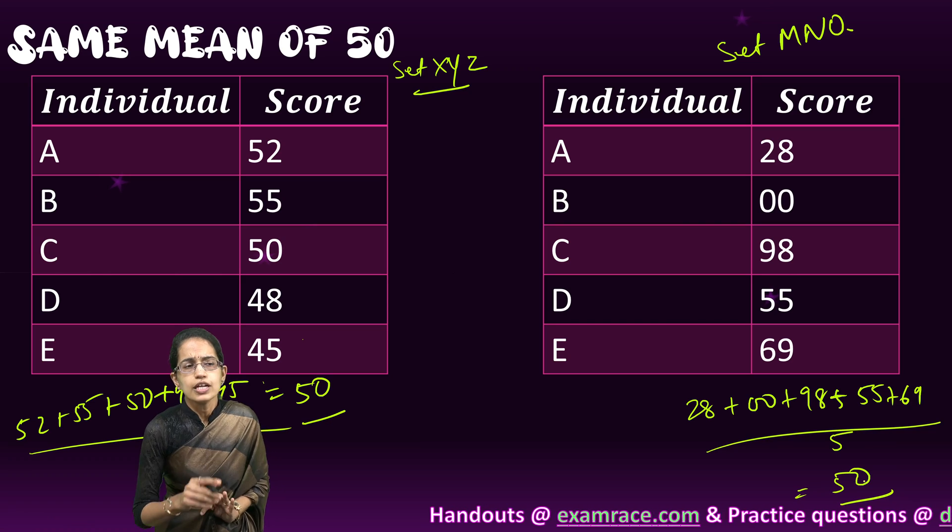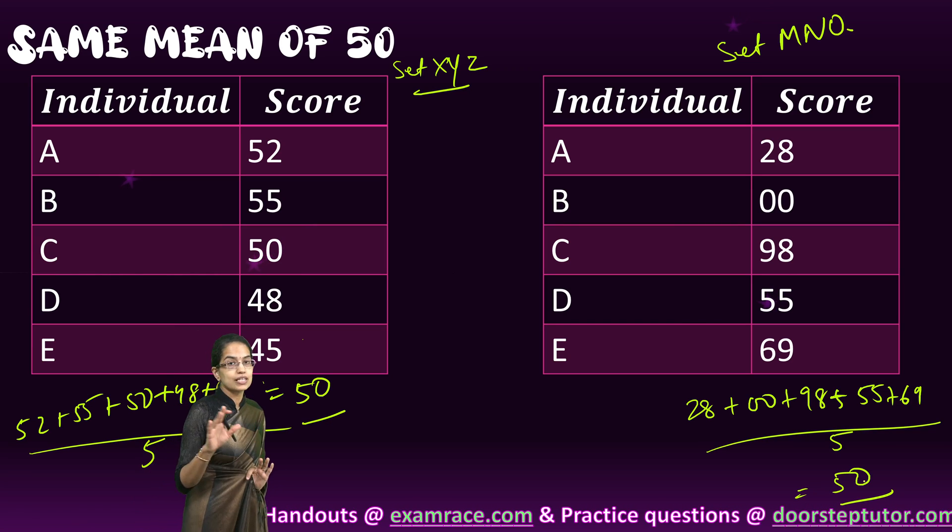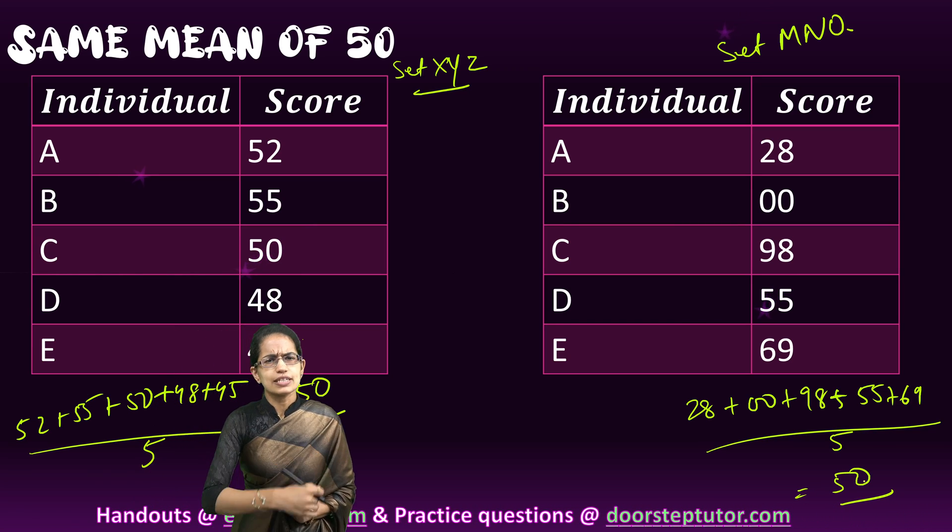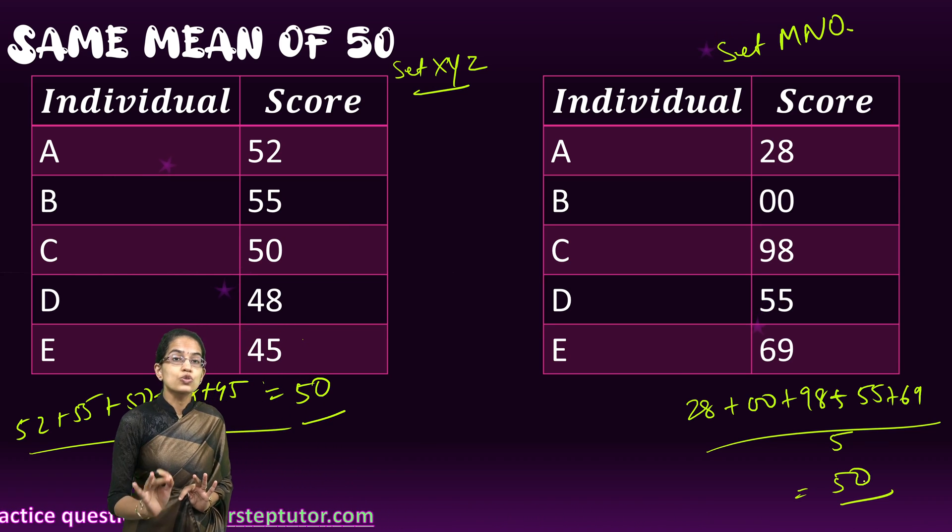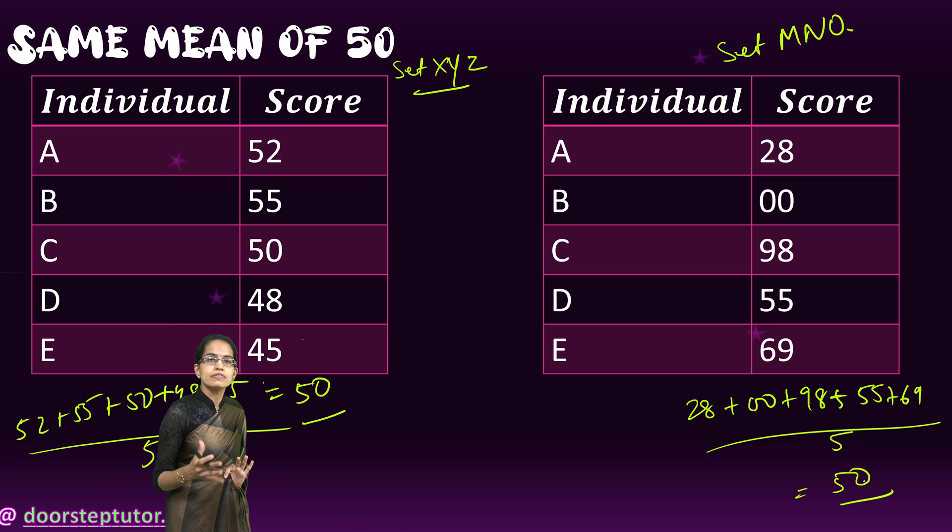In both these cases the mean is 50, but what is the difference? Definitely there is a difference. This difference can be simply cited through a simple phenomenon which is range.